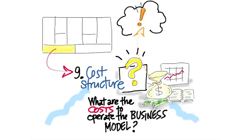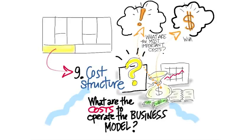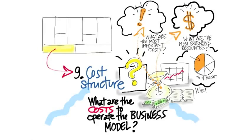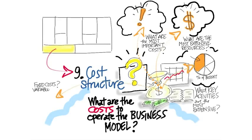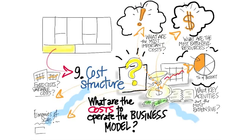You want to think about what are the most important costs you need to worry about, what are the most expensive resources you're going to need to pay for, and what key activities are the most expensive. Then you want to ask the typical accounting things: what are fixed costs, what are variable costs, are there economies of scale? You want to start getting a good handle on what it is that will end up costing you money to run your business.